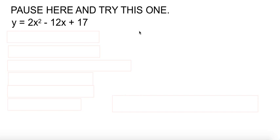I'm going to let you try one. y equals 2x squared minus 12x plus 17. Take a minute, see what you can do with it, and then come back and check.